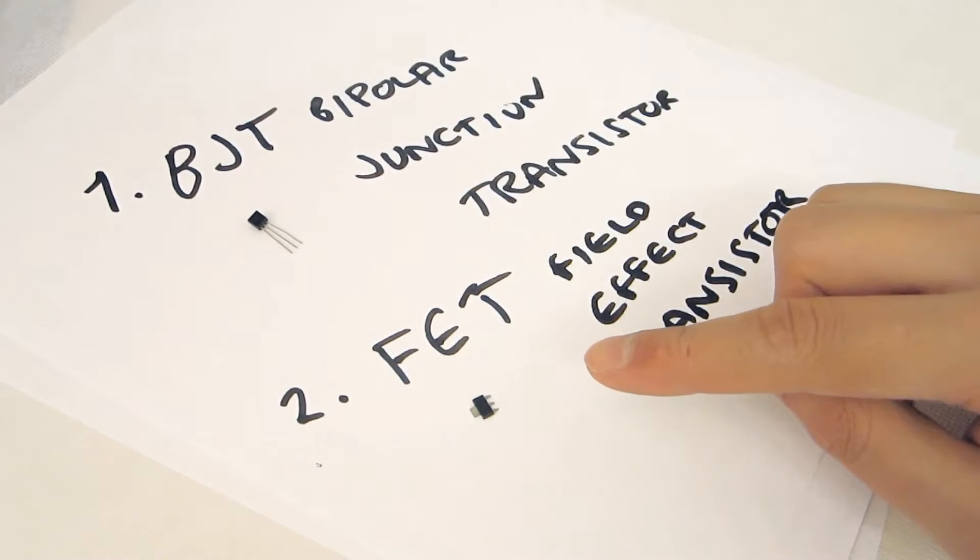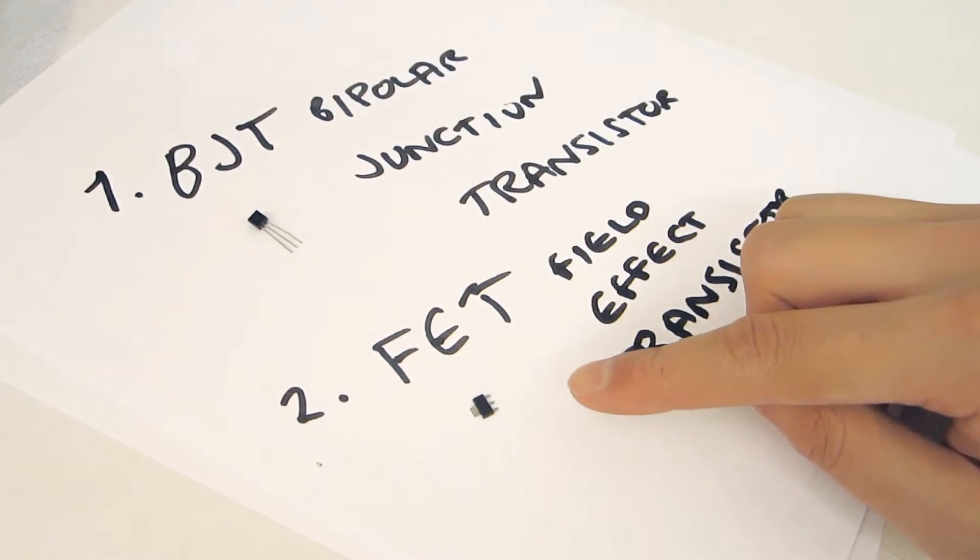FETs have three terminals: the gate, the source, and the drain, although many also have a fourth terminal called the body. Applying voltage to the gate controls the current flow between the source and the drain terminals.